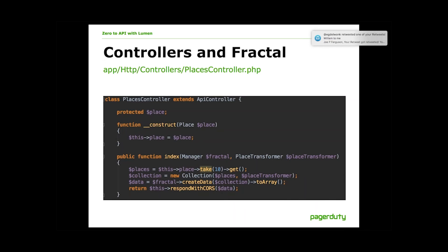I've pulled in Fractal. Controllers and Fractal go hand in hand. Rather than returning a view like we would with Blade, we're going to use Fractal and a Transformer to format our data so that the API client can consume it easily. We're going to extend an API controller — there are tons of examples online, and these can be as simple or as complex as you want. At its most basic, an API controller formats your data and returns something with an HTTP status code that an API client can understand. We're pulling in Fractal via composer.json. Think of Fractal like you would Views in Laravel, but instead of HTML, we're going to output JSON.